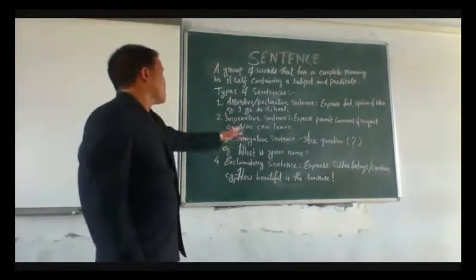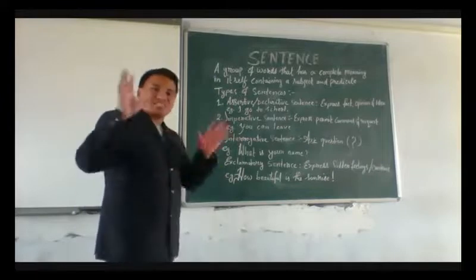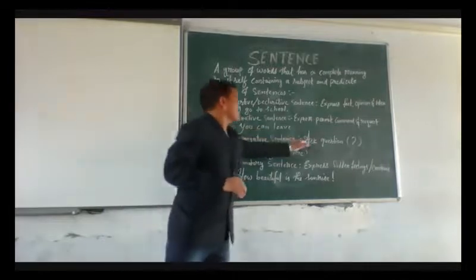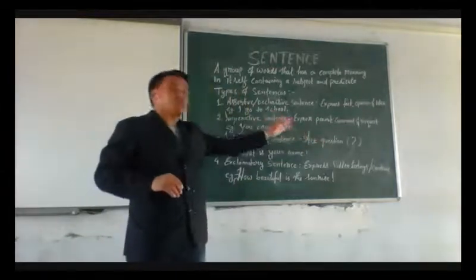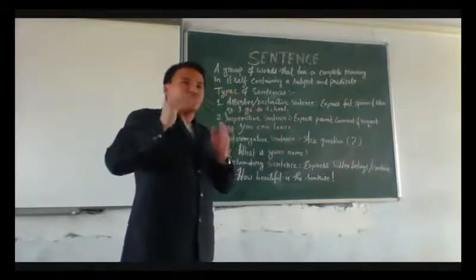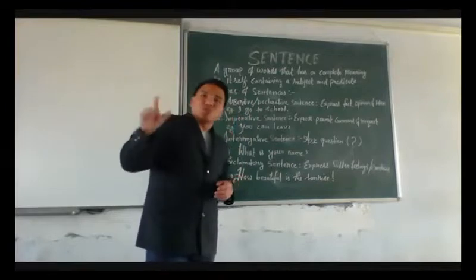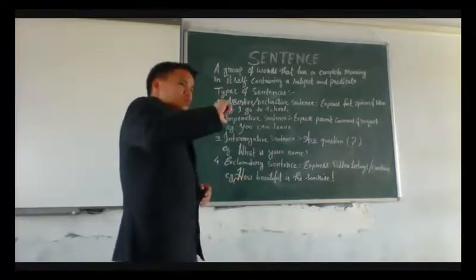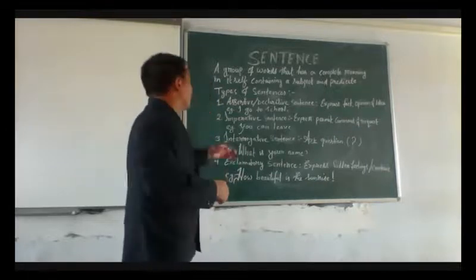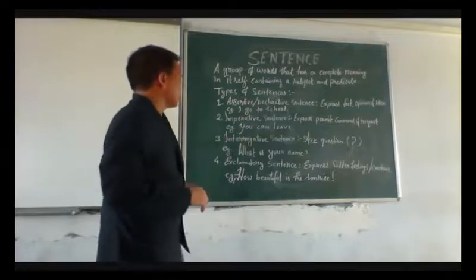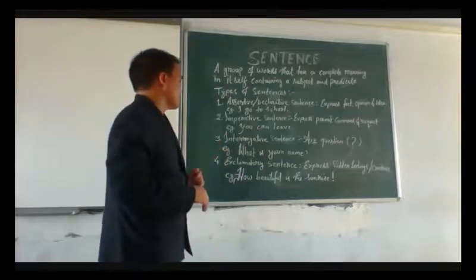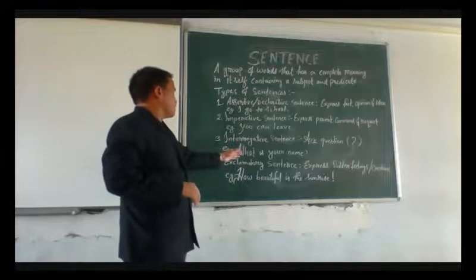The third type of sentence is interrogative sentence. Interrogative sentence is when somebody asks, or when a group of words is arranged in such a way that it turns out to be a question. When the group of words turns out to be asking something, we call it an interrogative sentence. We can take an example here, like 'What is your name?'